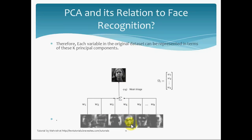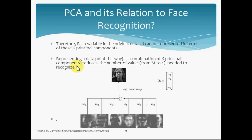This is the crux of principal component analysis in the face recognition method. Representing a data point — that is, representing an image — as a combination of k principal components reduces the number of values from m to k needed to recognize it. Before, we said that a training set of m images (m could be 400) is now represented in terms of k eigenfaces, and k could be like 50.